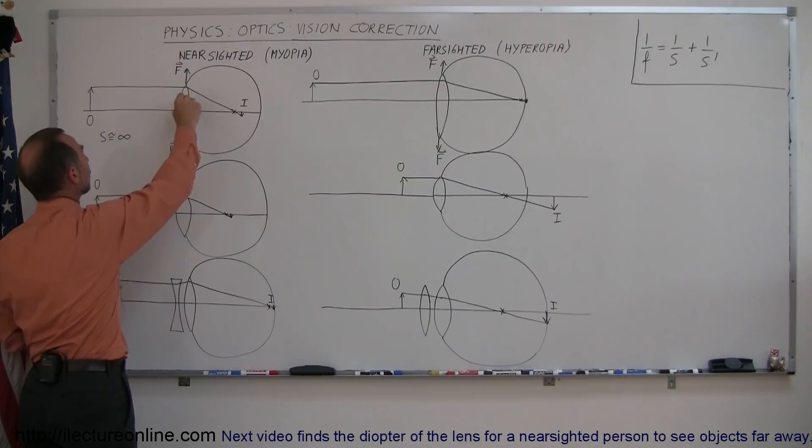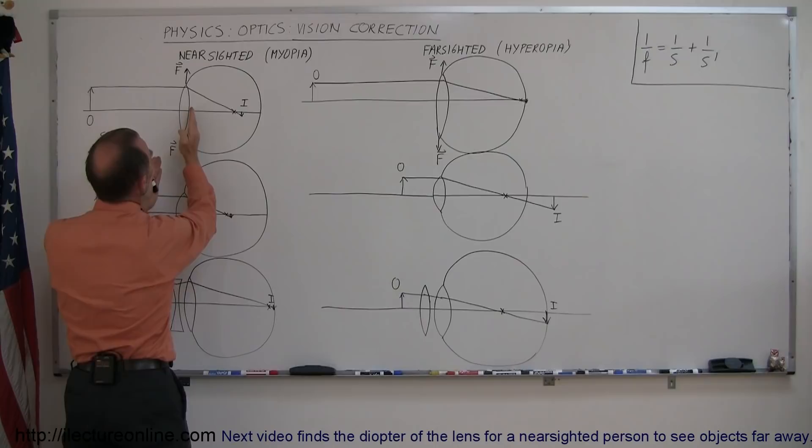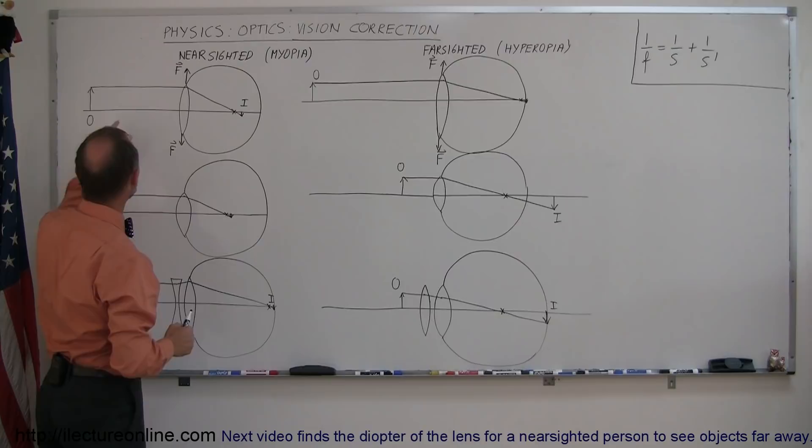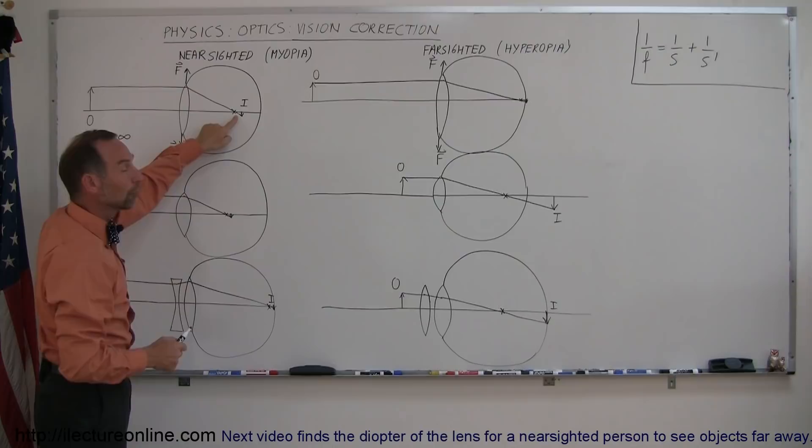That means that the eye will, there's muscles in the eye that will pull on the lens, try to stretch the lens, and when the lens is stretched it will pull the focal point farther to the right. The reason why the eye needs to do that is because objects that are very far away will form an image very close to the focal point, just right behind it.